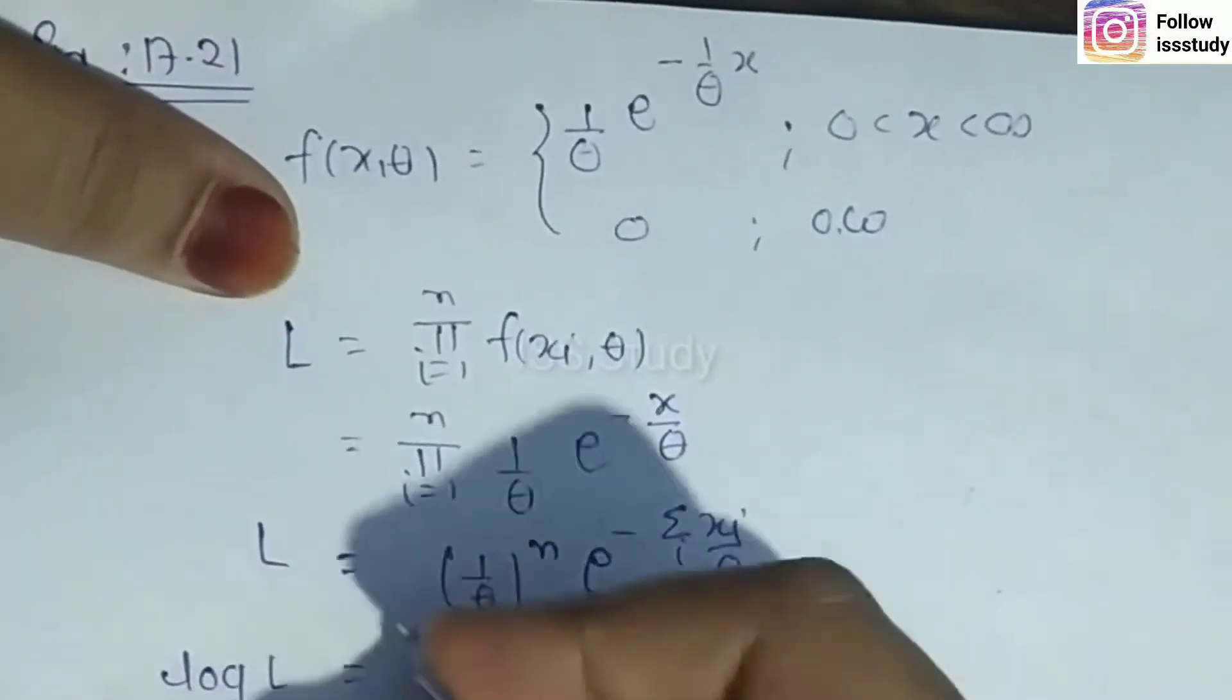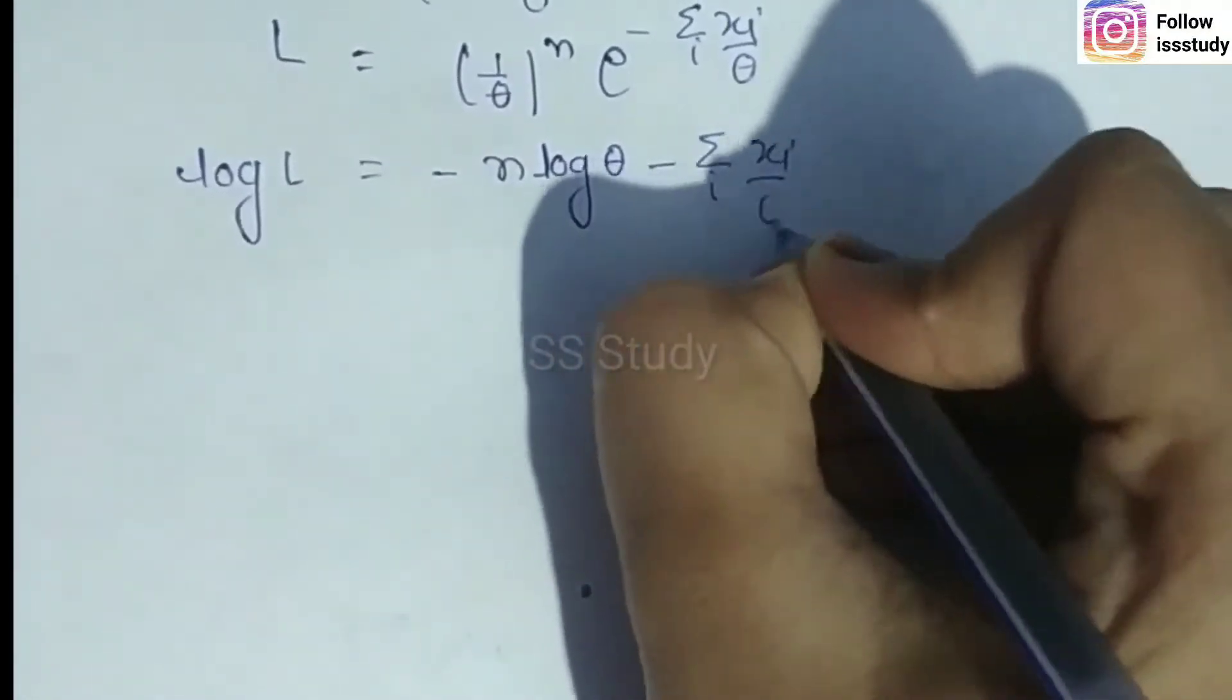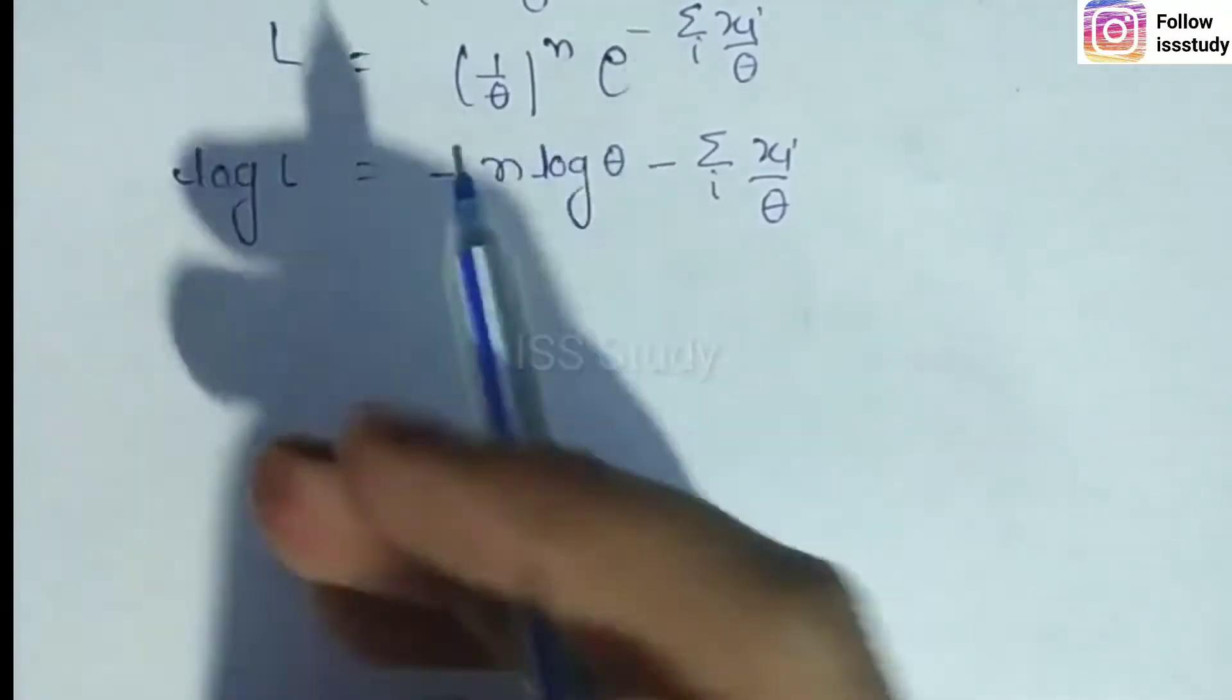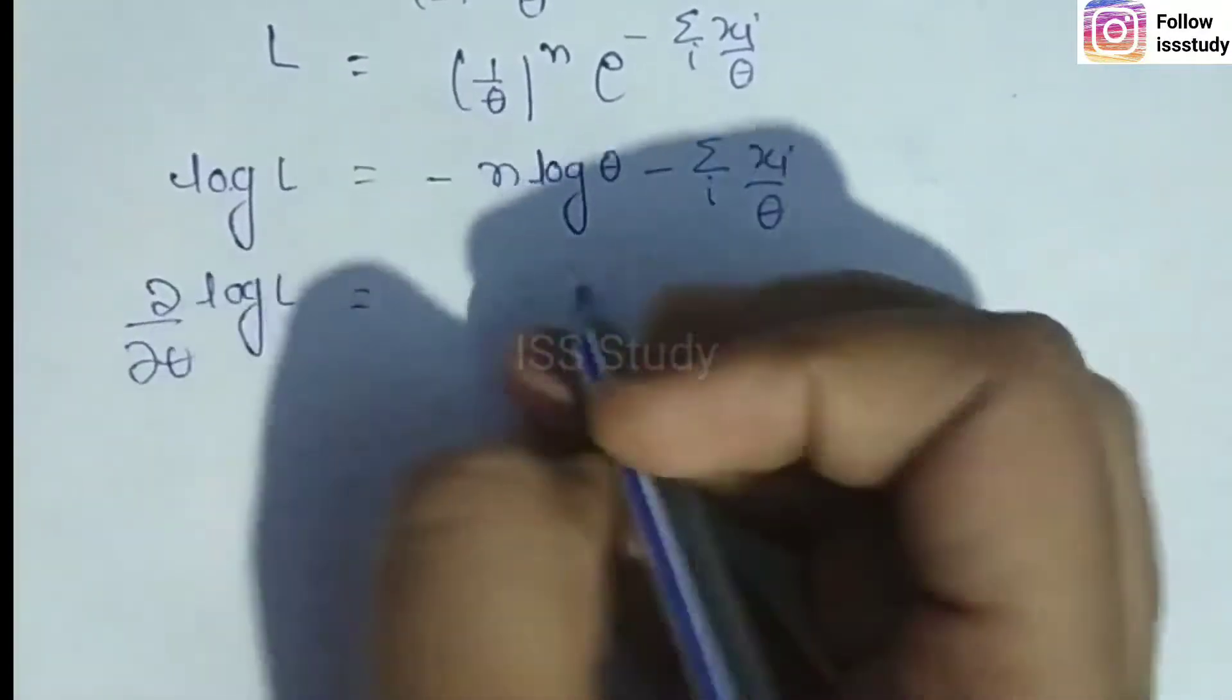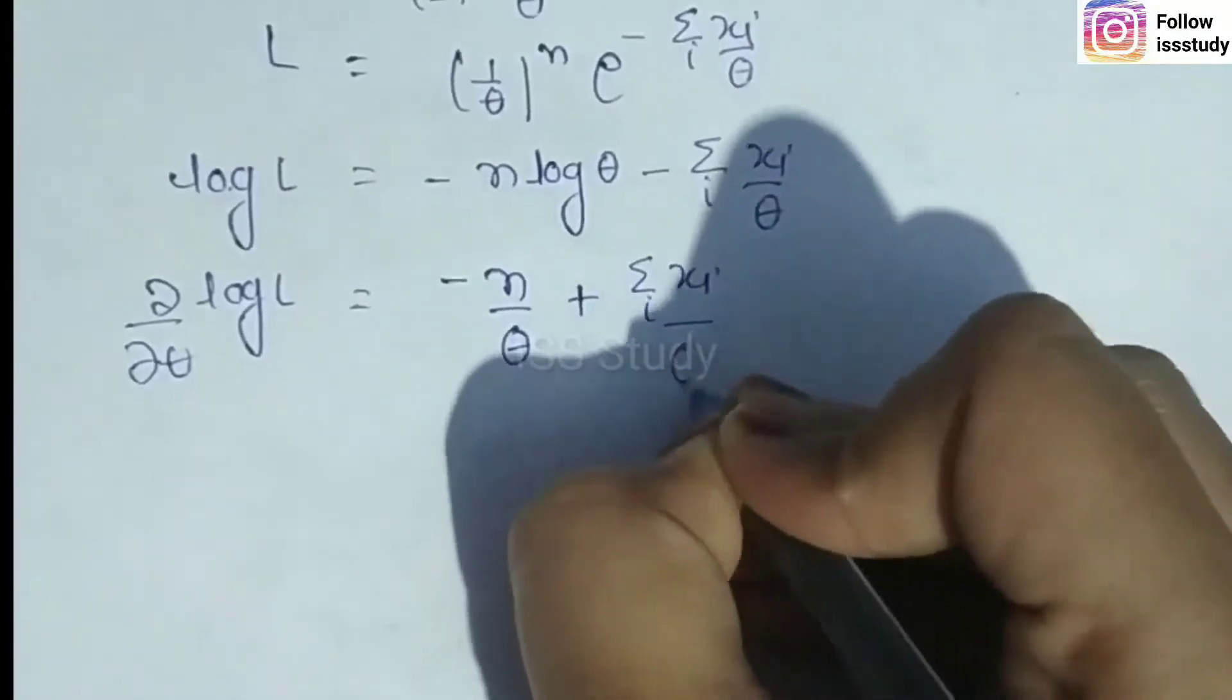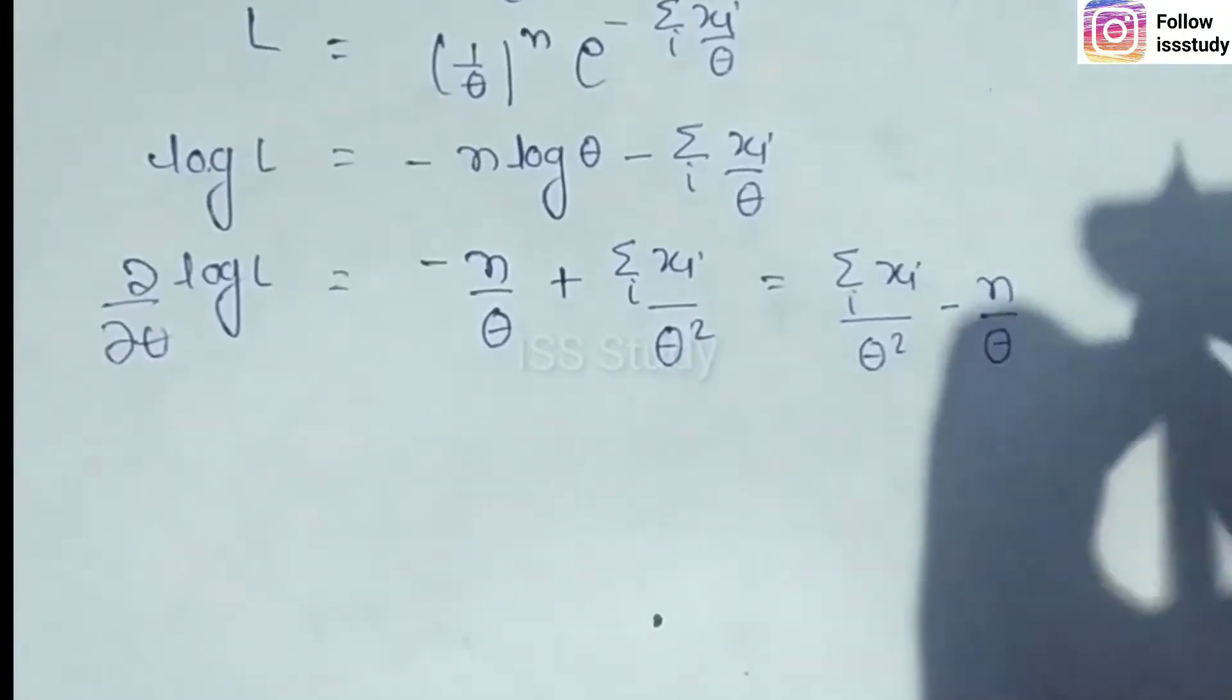Next step: we need to take the log. So log L = -n log θ - Σxi/θ. Now we differentiate with respect to theta. This gives -n/θ + Σxi/θ². We rearrange this: move this sum first, then write -n/θ after.